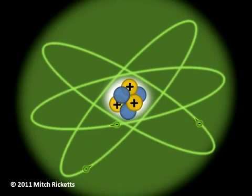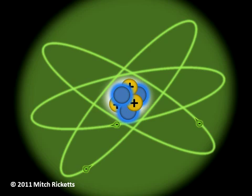Although all atoms of a particular element have the same number of protons, the number of neutrons may vary. The number of neutrons in the nucleus determines the isotope of the element to which an atom belongs.